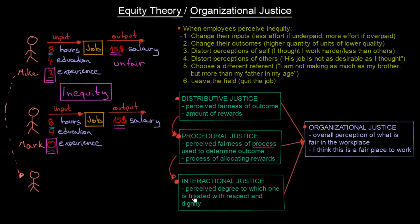Finally, we have interactional justice — the perceived degree to which one is treated with respect and dignity. If these two employees have a boss or operational manager, that manager should treat them with respect and dignity so they feel interactional justice has been fulfilled. When all three types are fulfilled and satisfied, they connect to create organizational justice — the overall perception of what is fair in the workplace.